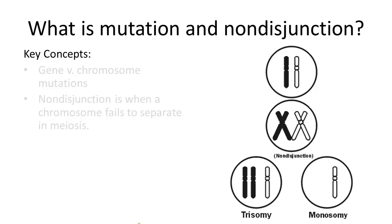Mutations are any abnormalities in a genome, and they can disrupt the functioning of a cell or even an entire organism. There are two types of mutations: gene mutations and chromosome mutations. Any change in the DNA sequence is considered a gene mutation.